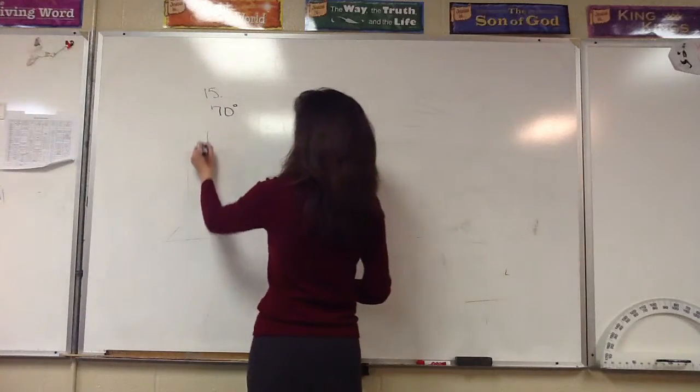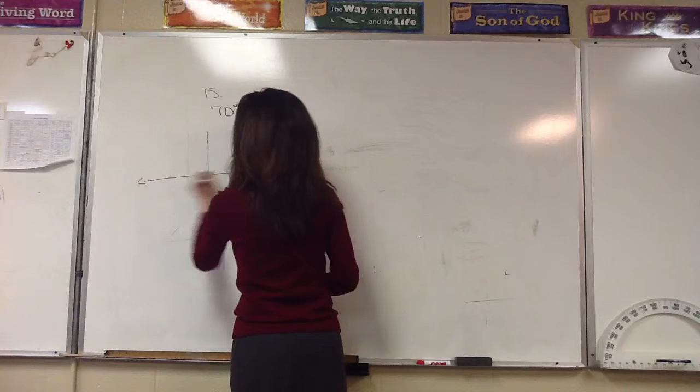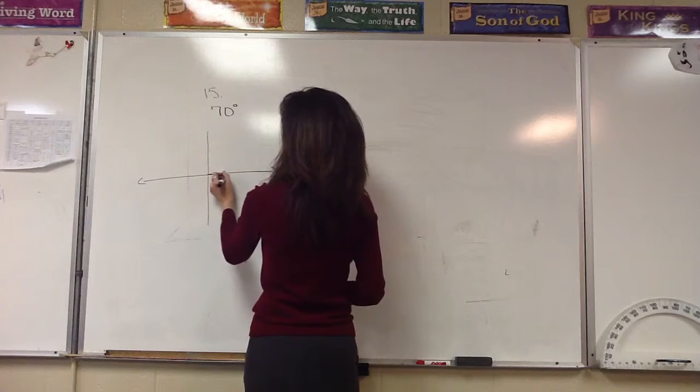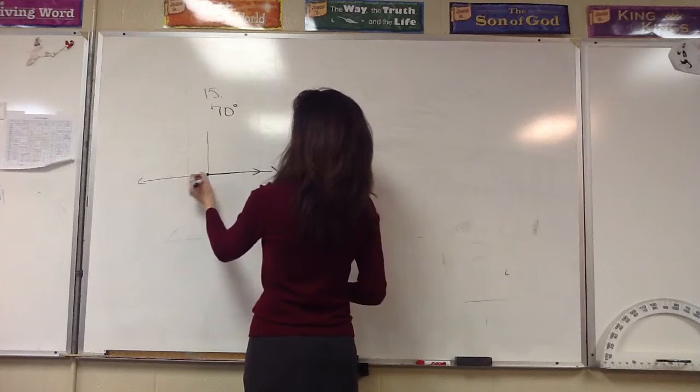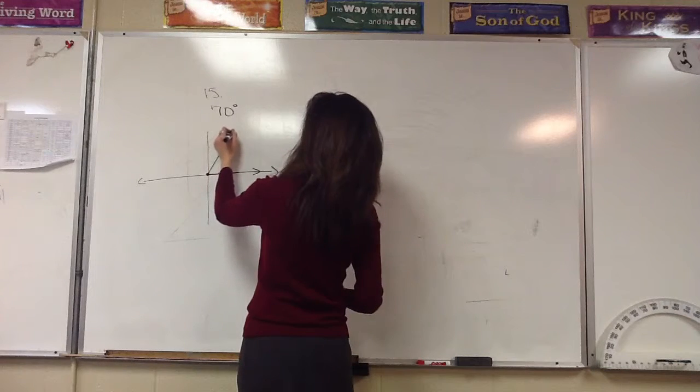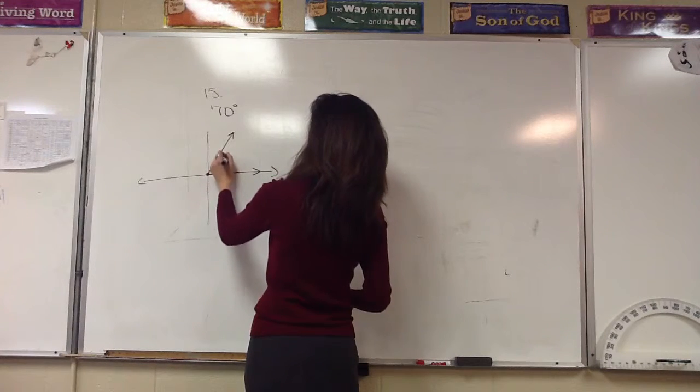So what I'm going to do is draw the angle in standard position. The terminal side will lie here, and then we know it's going to be 70, just a little less than 90 degrees. So there's my 70-degree angle.